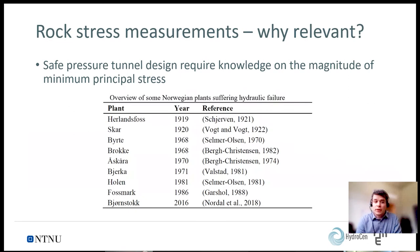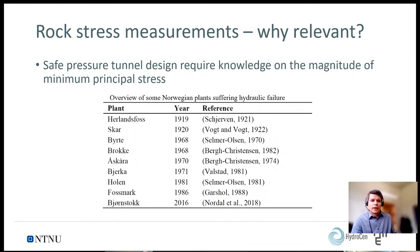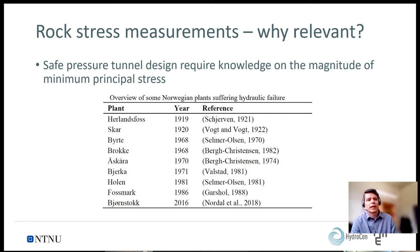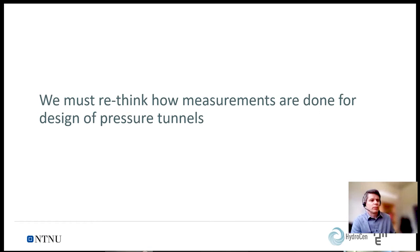These are some of the historical events. The last known event occurred in Norway in 2016 — and I know there are more than these. Essentially, the key point I want to communicate is that safe pressure tunnel design requires knowledge of the magnitude of the minimum principal stress, and I believe we must rethink how such measurements are done for the design of pressure tunnels.